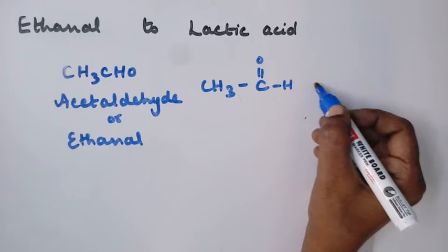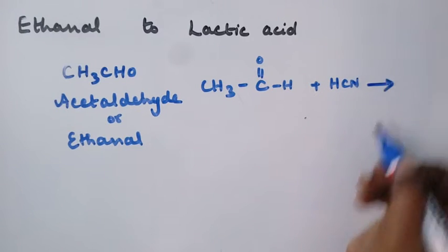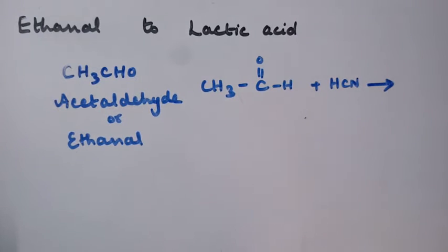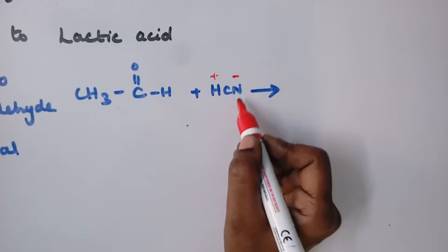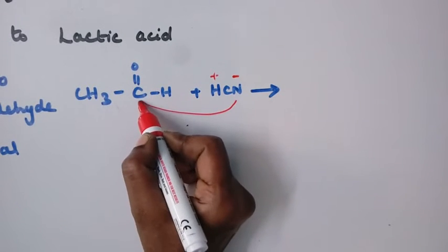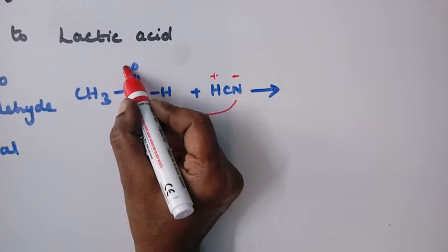This is ethanol. This on treatment with HCN we get an addition product. The HCN separates as H plus and CN minus. The CN minus comes and attacks this carbon and this carbon develops positive charge.